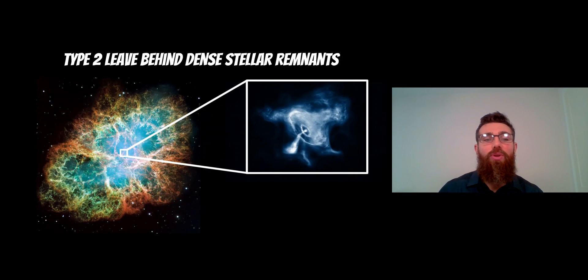Also, type 2 would leave behind a stellar remnant. So a neutron star, a pulsar, or a black hole. Because of the mechanism that caused it and the core collapsed, you would be left behind with something quite dense in the center.